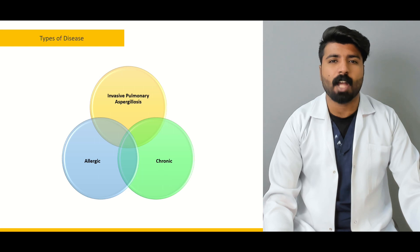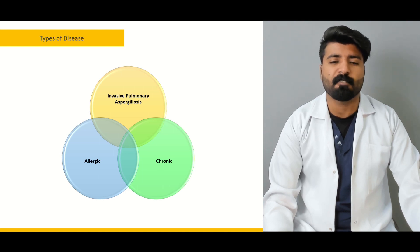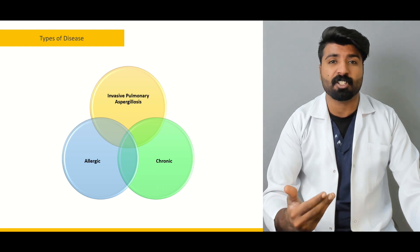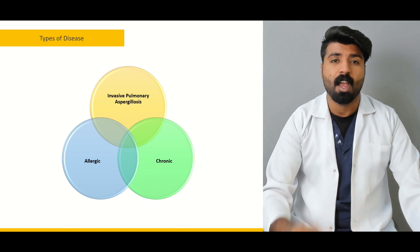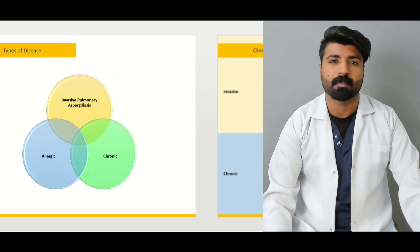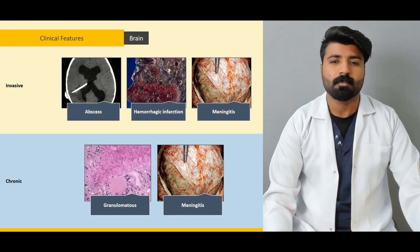Next, we'll talk about the types of disease. We're going to cover what invasive pulmonary aspergillosis is, what the chronic manifestations of the disease are, and what the allergic manifestations of the disease are.